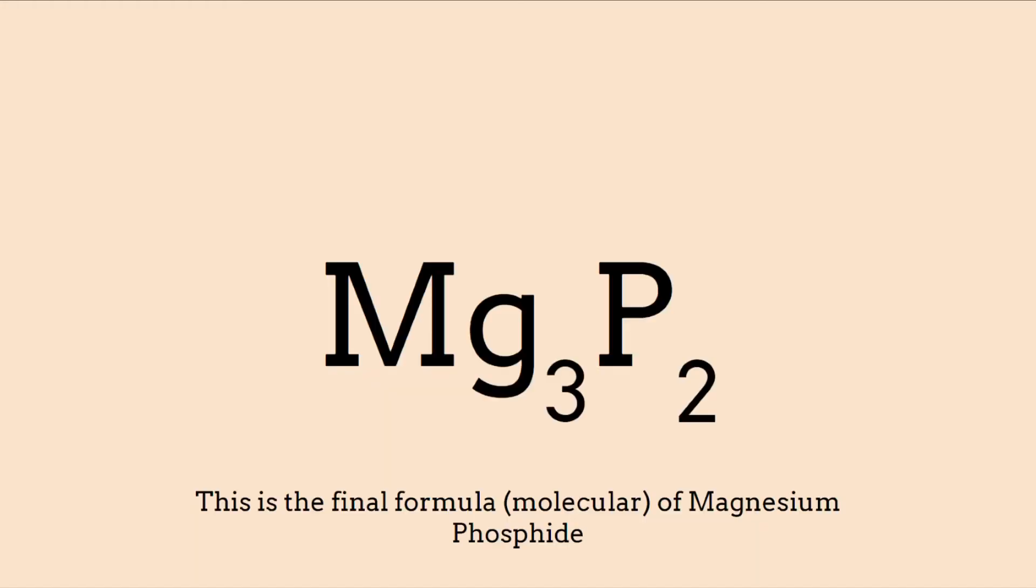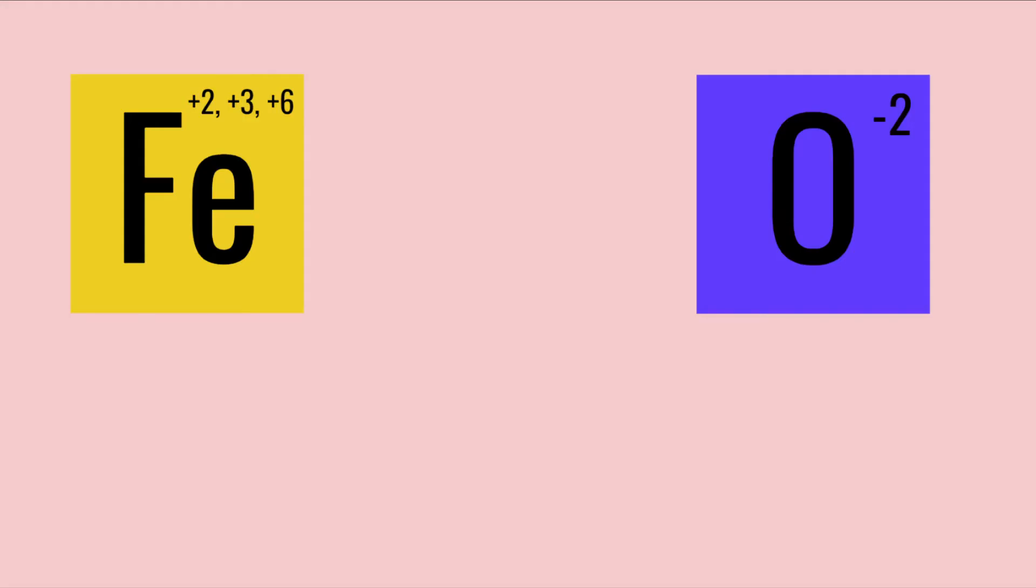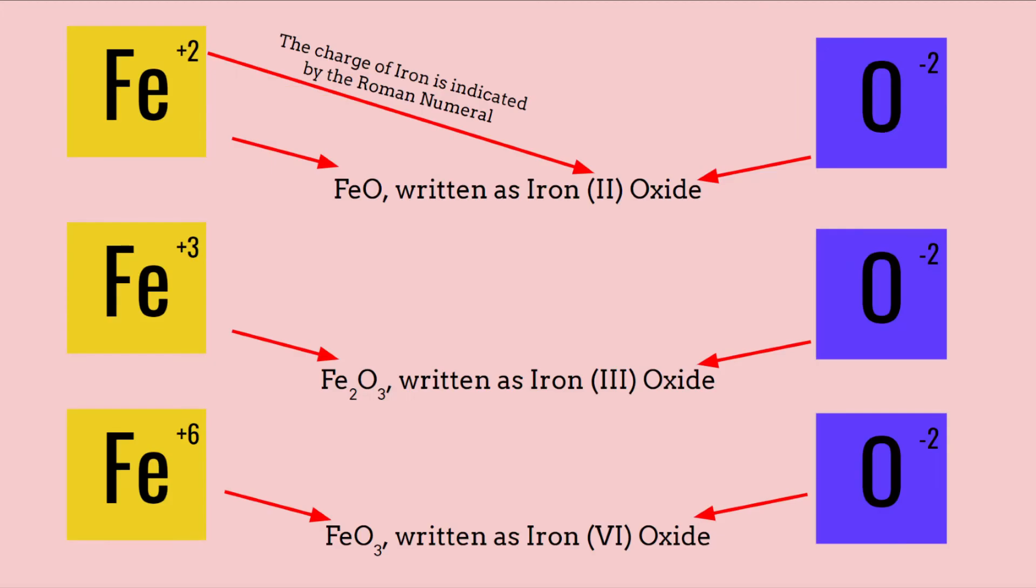Let's see what a bond with a transition metal looks like. If we take iron and oxygen, how would they bond? Here we run into a problem. Iron has multiple possible charges. This is where roman numerals come in. The most common charges or oxidation states of iron are plus two, plus three, and plus six, and we indicate these with roman numerals. This is how the bonds would look.